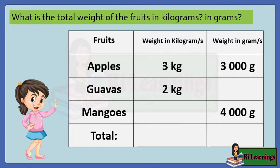Merites bought some fruits. She bought 3 kilograms of apples, 2 kilograms of guavas, and 4,000 grams of mangoes. She wants to determine the total weight of the fruits in kilograms and grams.